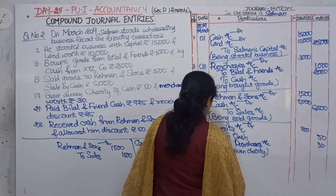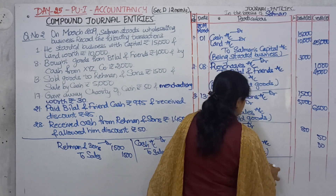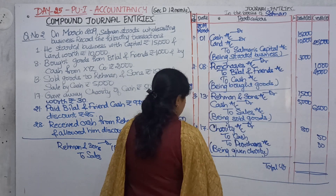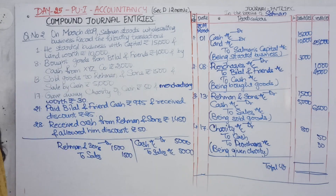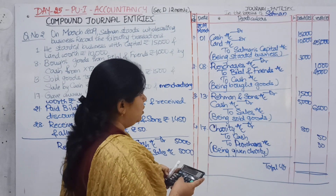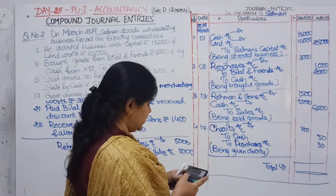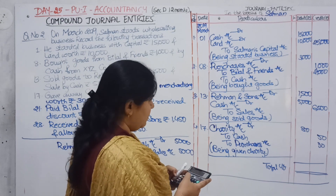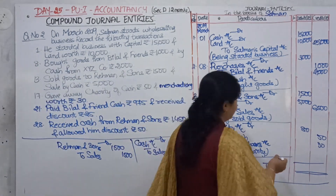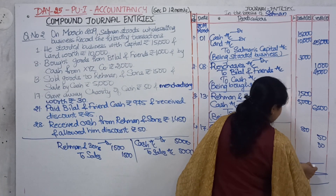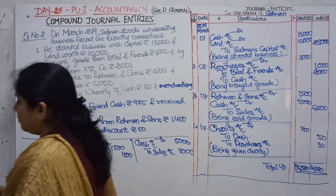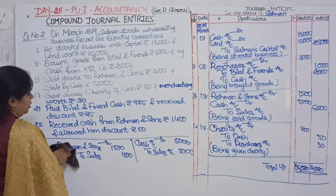Do the total for this page. That is 25,000 plus 3,000 plus 6,500 plus 80, which equals rupees 34,580. This same total should be brought forward for the next page of your journal book. Write down 'total carried forward' and then on the next page 'total brought forward: 34,580' in both columns.